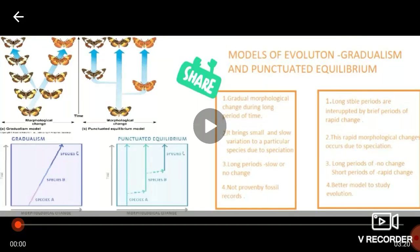Hello, welcome back to Junior Passants. Today's topic is the models of evolution. First one is gradualism and second one is punctuated equilibrium.